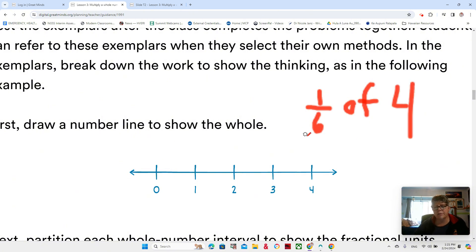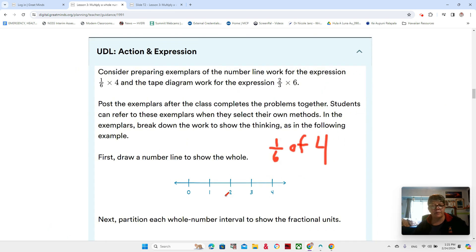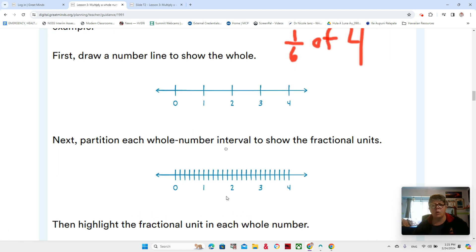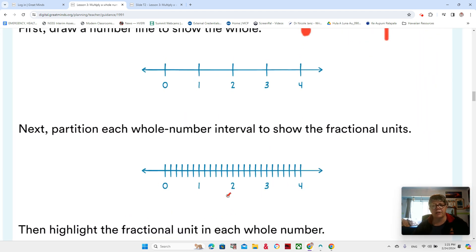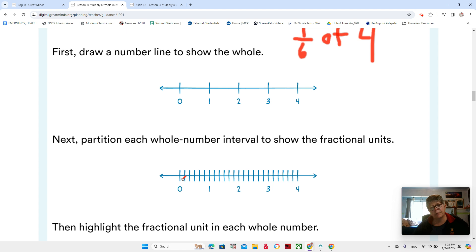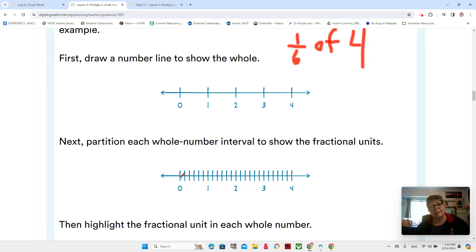We're going to draw a number line that's going to go from zero all the way to four. Now we're going to break each whole number interval to show the fractional units. What fractional units are we going to use here? Six, because we're trying to get one-sixth of four. You can see one, two, three, four, five, six parts inside of each whole number.